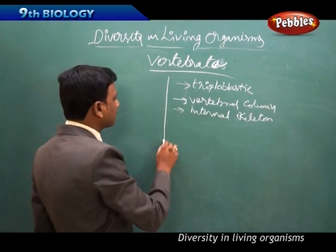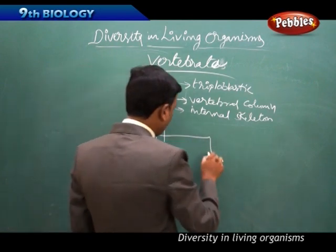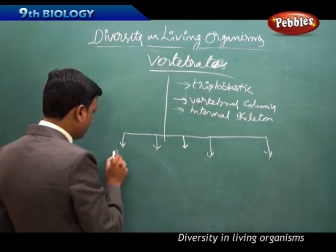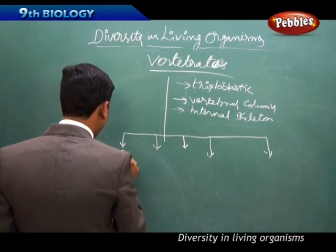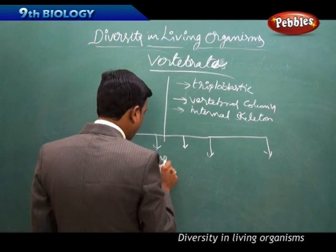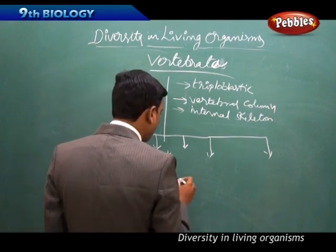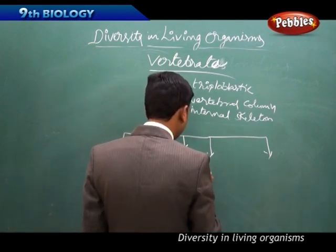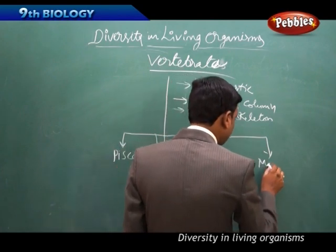Vertebrata is divided into five major groups: first, Pisces; second, Amphibia; third, Reptilia; fourth, Aves (birds); and fifth, Mammals.